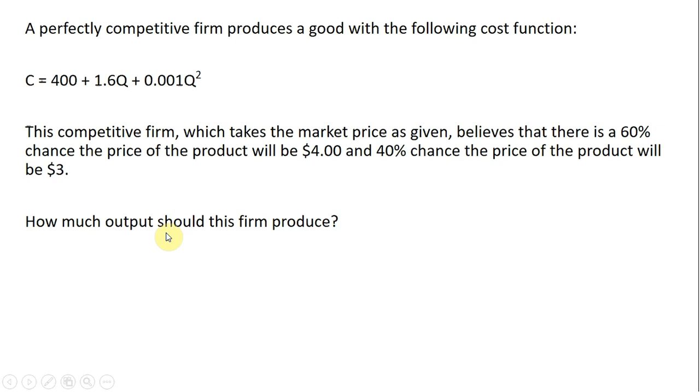How much output should this firm produce, given this uncertainty? The first thing we want to do is calculate the expected price. This is just an expected value calculation. 0.6 times 4 represents that there is a 60% chance or probability that the price will be $4, and then 0.4 times 3 represents the fact that there is a 40% chance that the price of the product will be $3. So doing the math here, the expected price is $3.60.